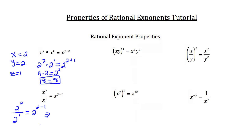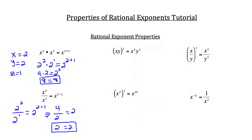2 squared is 4, and on the denominator, 2 to the first power is just 2. On the right-hand side of the equation, 2 raised to 2 minus 1 — well, 2 minus 1 is 1 — so we have 2 raised to the 1 power, or just 2. You know that 4 over 2 equals 2, so in the end we have 2 equals 2. That's how the division property of rational exponents works.